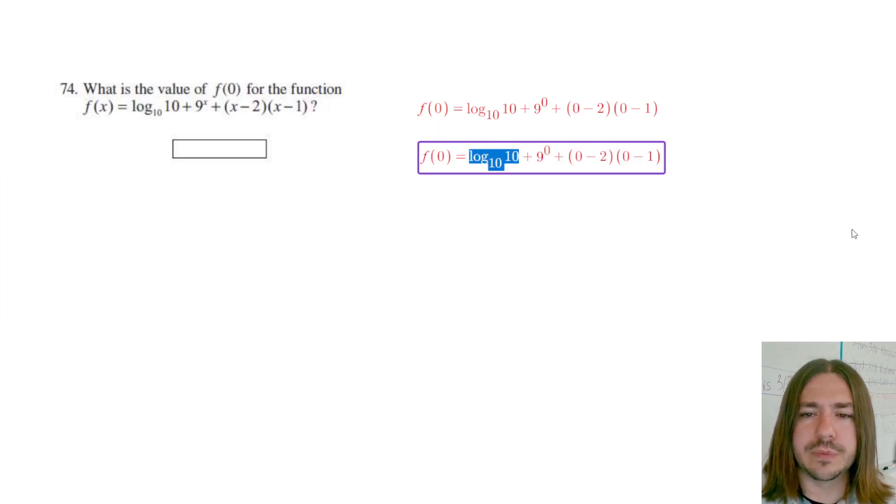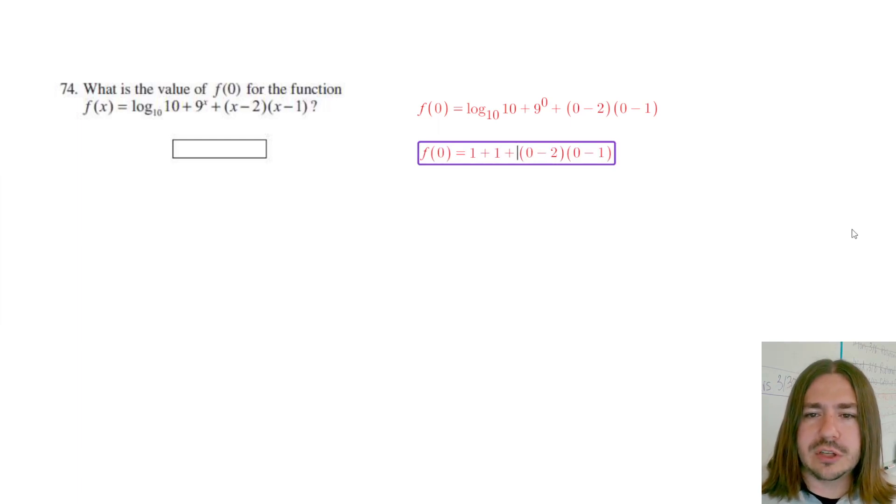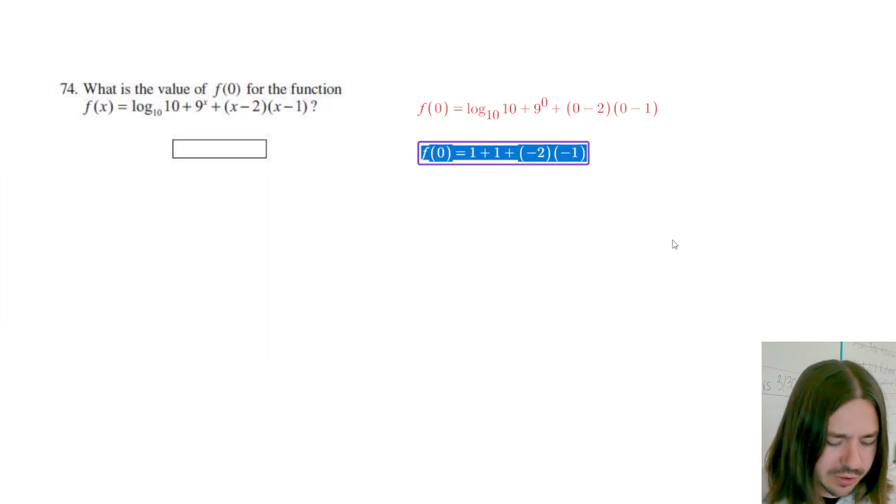9 to the 0th power is also 1. 0 minus 2 is just negative 2. So we have plus negative 2 times 0 minus 1, which is negative 1. So following the order of operations: